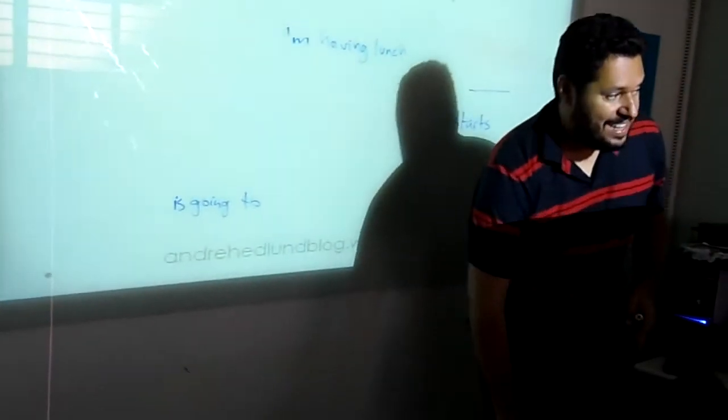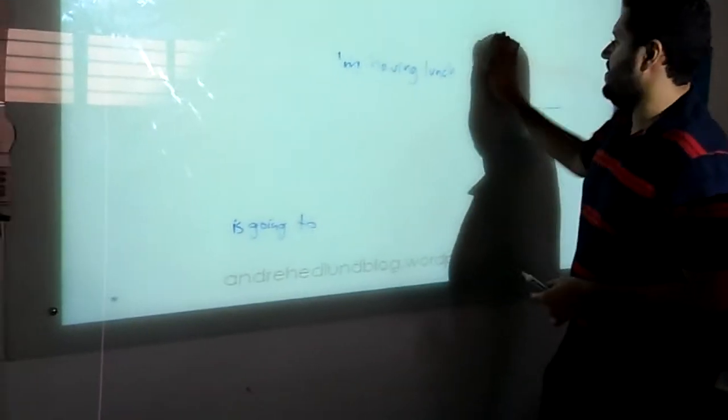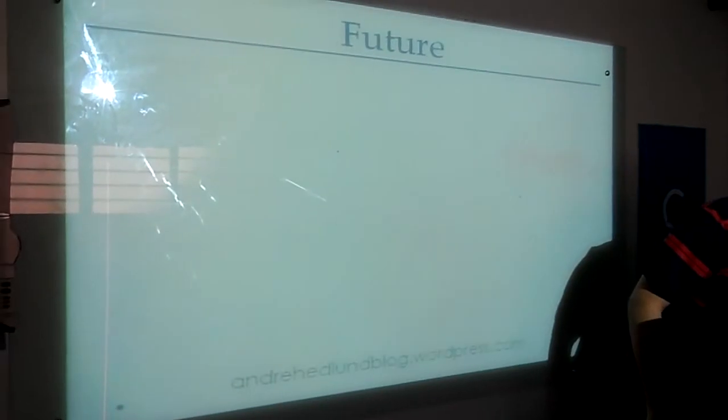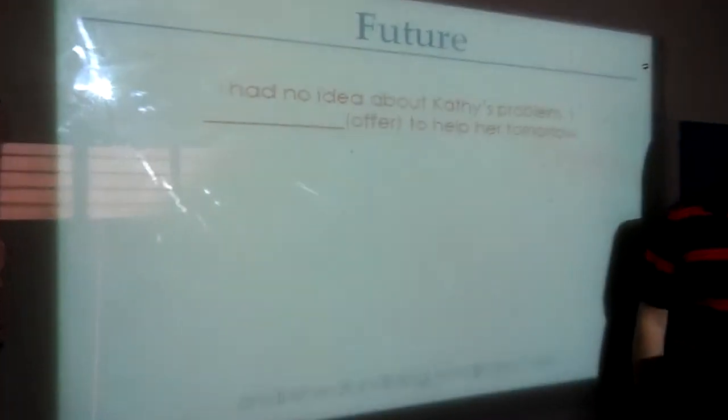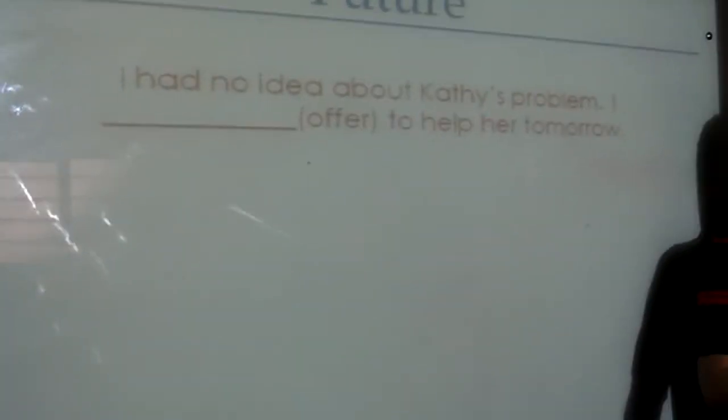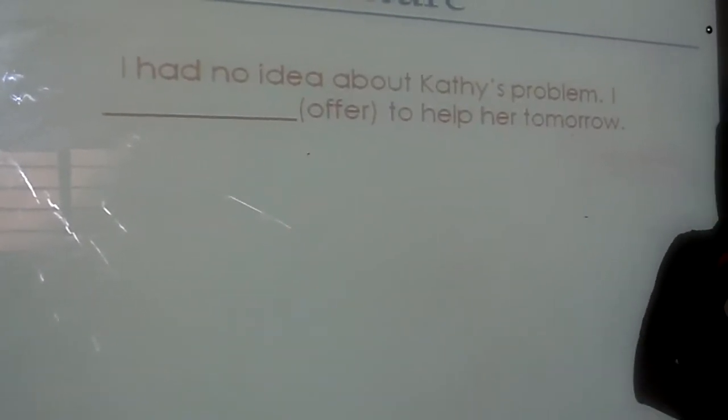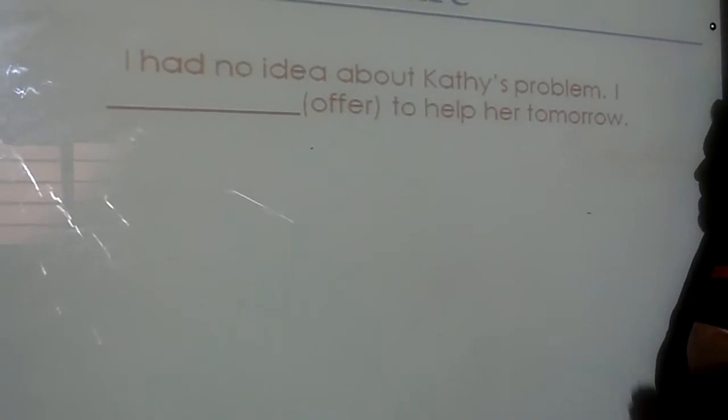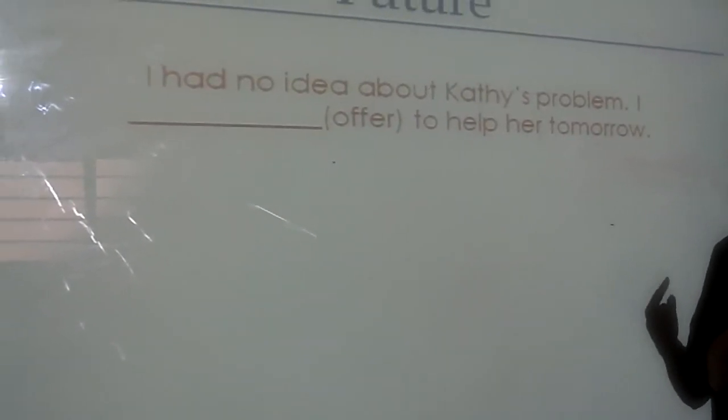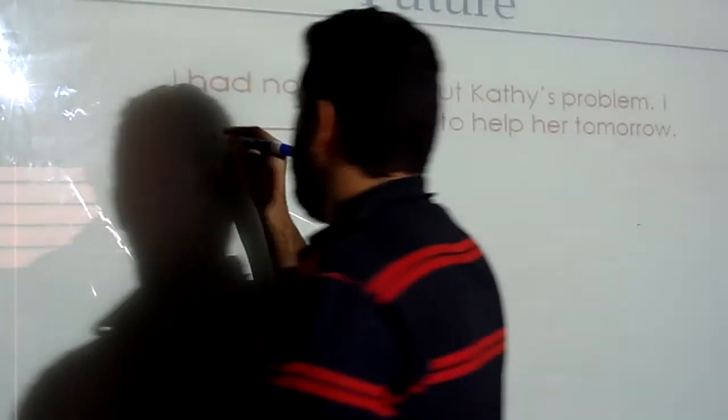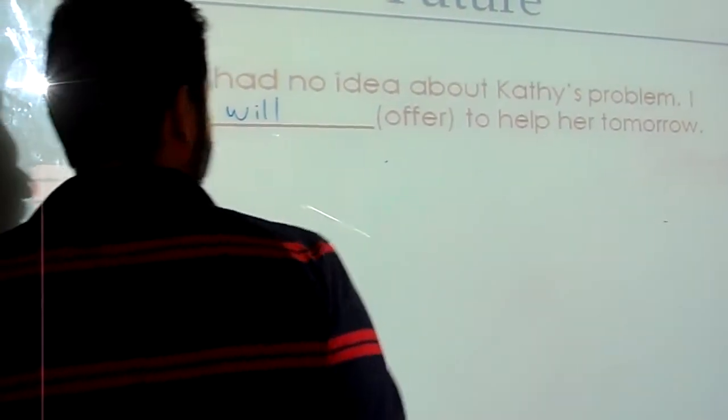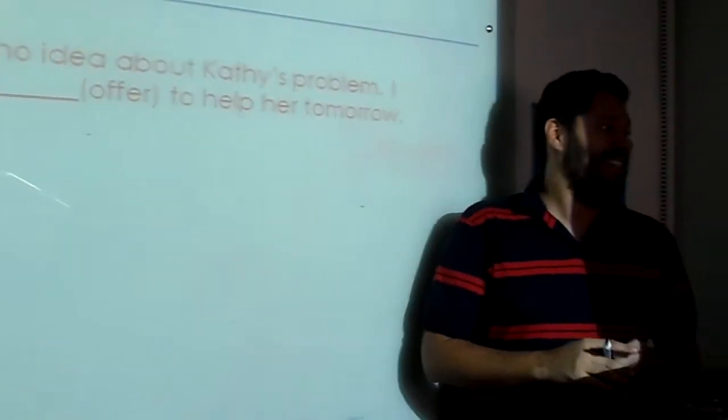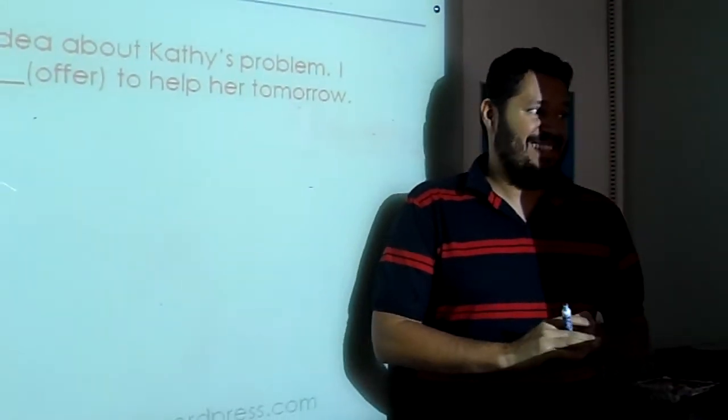All right, guys. Now, let's take a look at those sentences, the next ones, very quickly. Different color. So, it's a different thing. So, I had no idea about Kathy's problem. So, I will. I will, right? Why do you say that, Camila? Because it is a plan, but it's not something that you have evidence and you are sure of it.